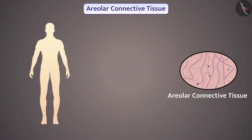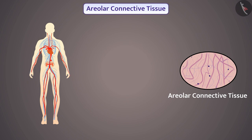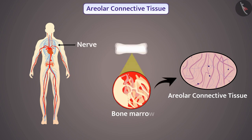Areolar connective tissue is present between the skin and the muscles of the body, around blood vessels, and in the nerves and bone marrow. The cells of this tissue are loosely packed and embedded in a jelly-like matrix. This tissue fills the space inside organs, supports internal organs, and also helps in repair of tissues.